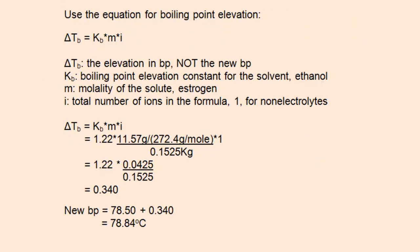Substituting in the numbers, calculate delta T is 0.340 degrees Celsius, add that to 78.5 to come up with a new boiling point of ethanol.